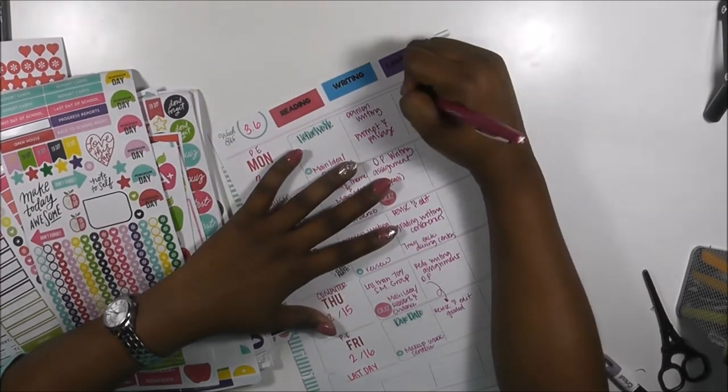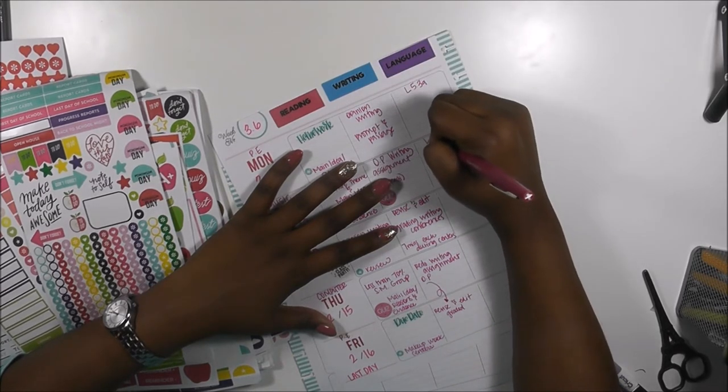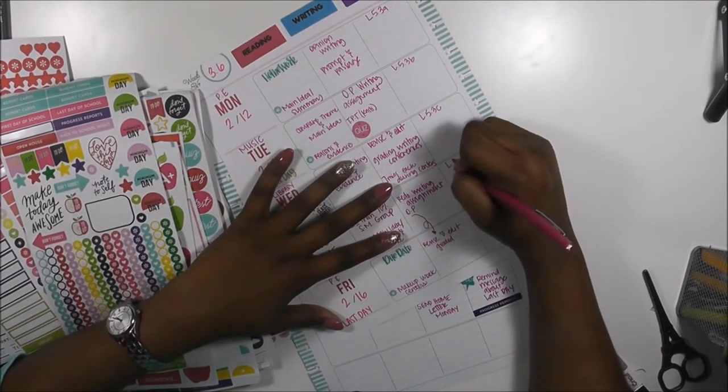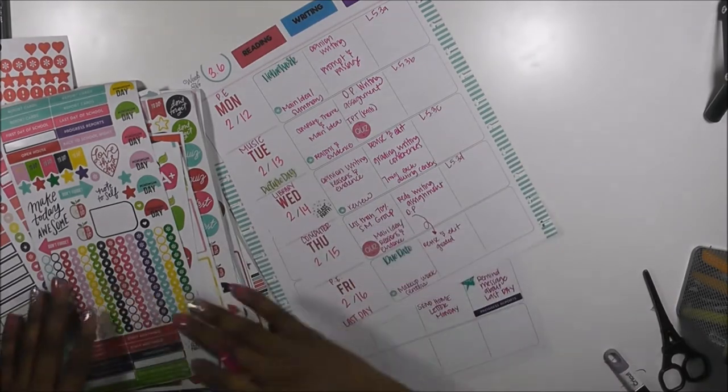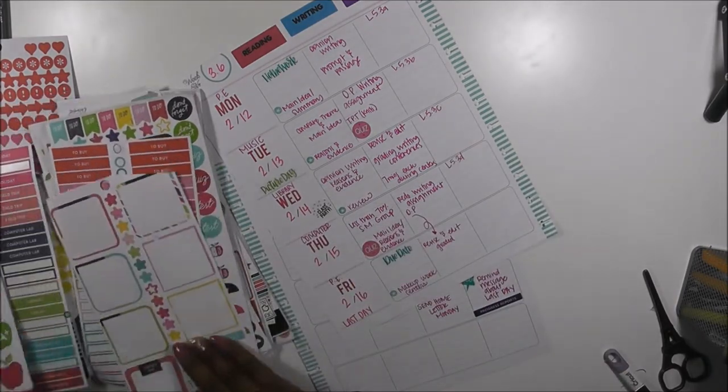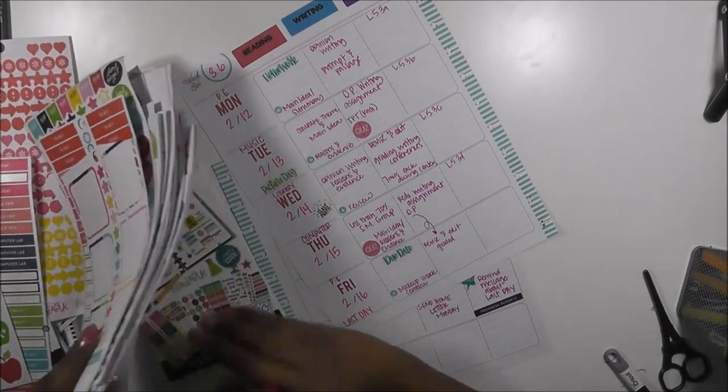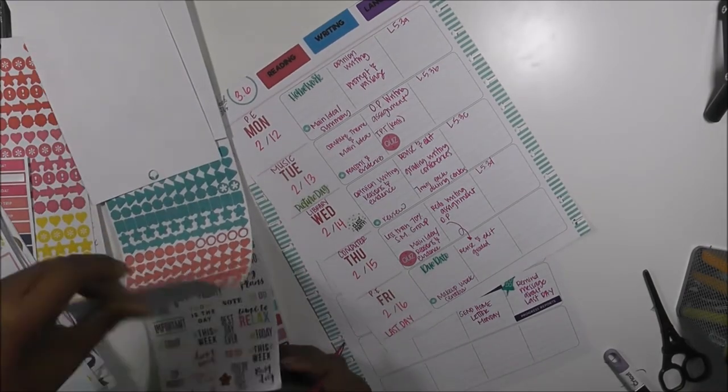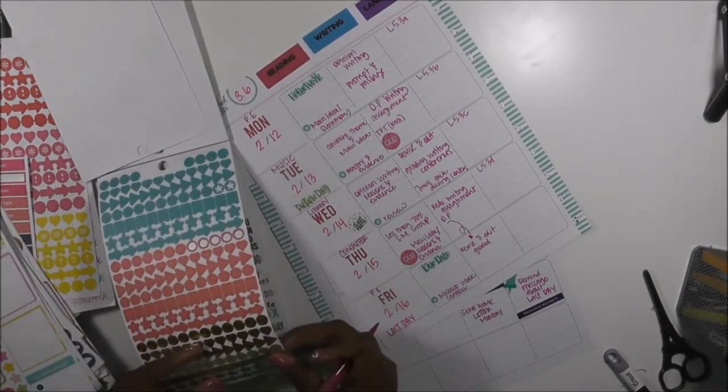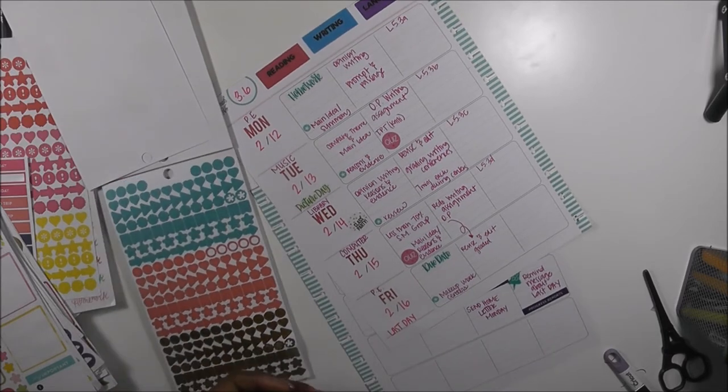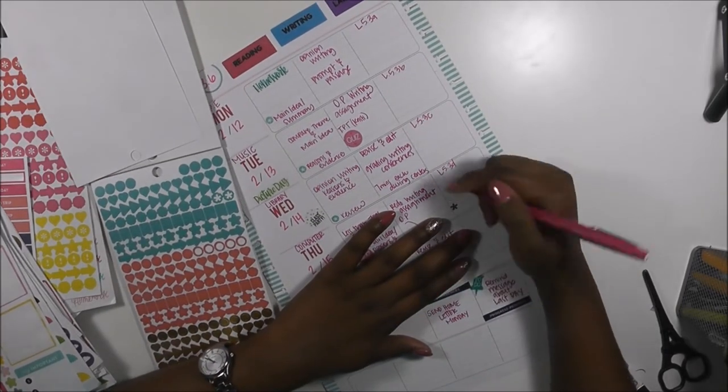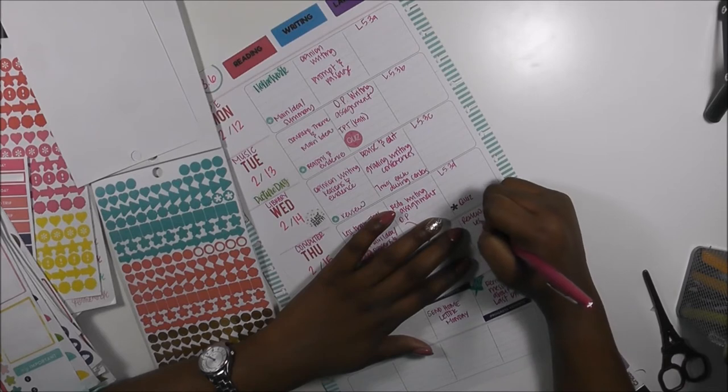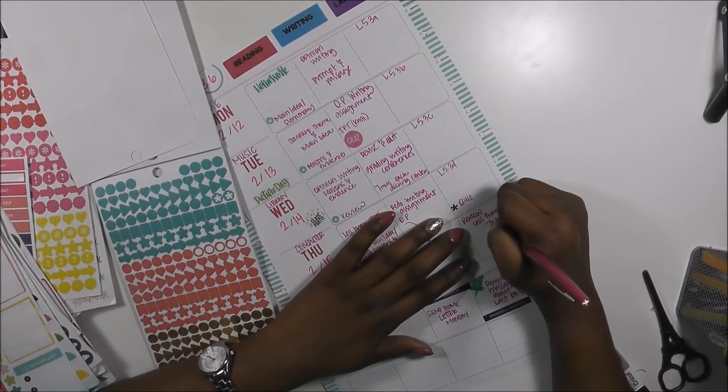Language arts, we're going to be looking at L5.3a, L5.3b, L5.3c, L5.3d, and then we will quiz on that day also. So let me get back to my quiz sheets. The quizzes that I give my students are not very long. They're generally about 10 to 12 questions. They are digital, so students don't really struggle too much with them. So they'll do a quiz, and then I will review less than 70.